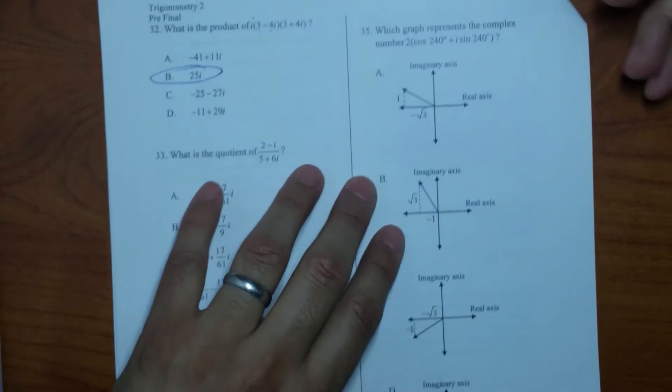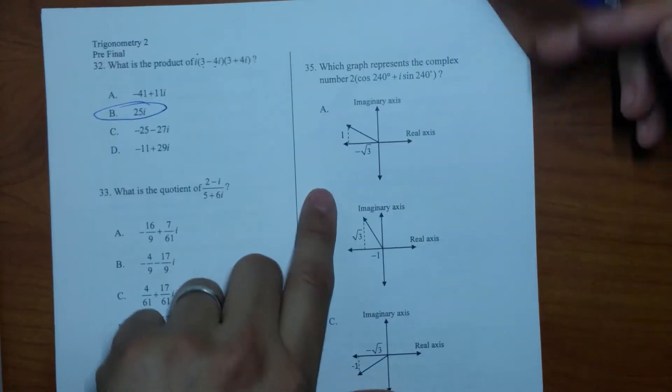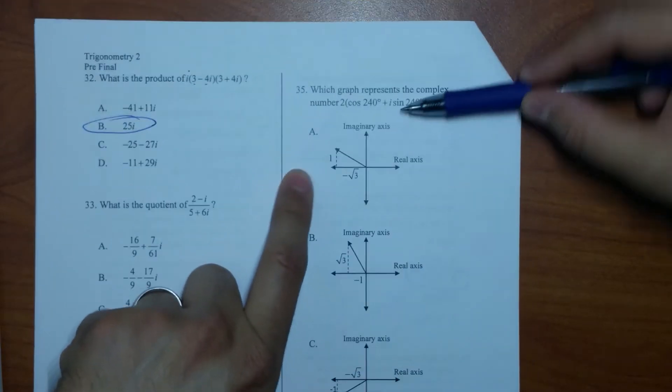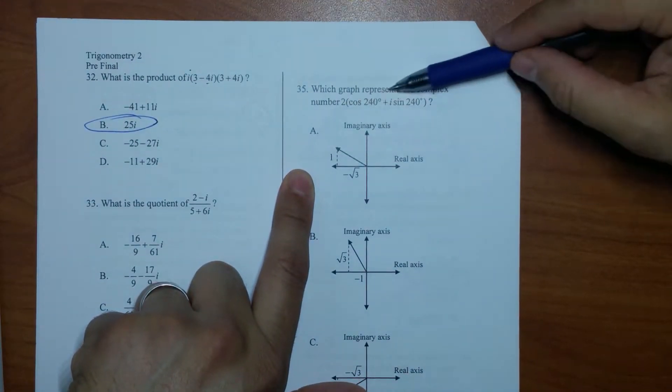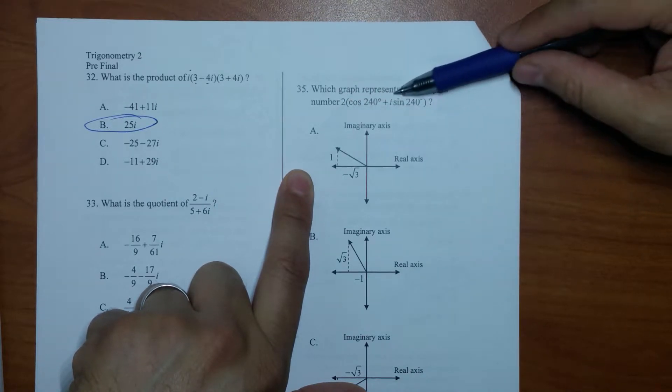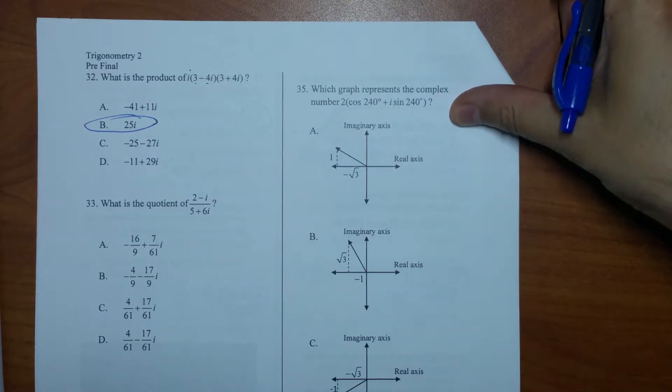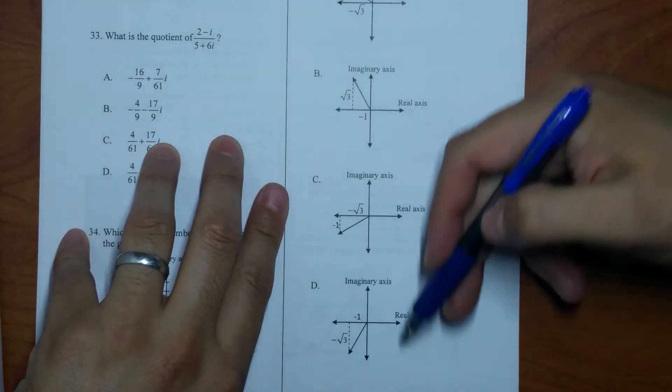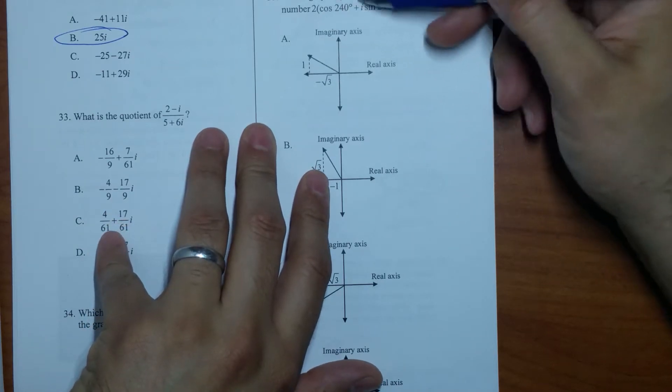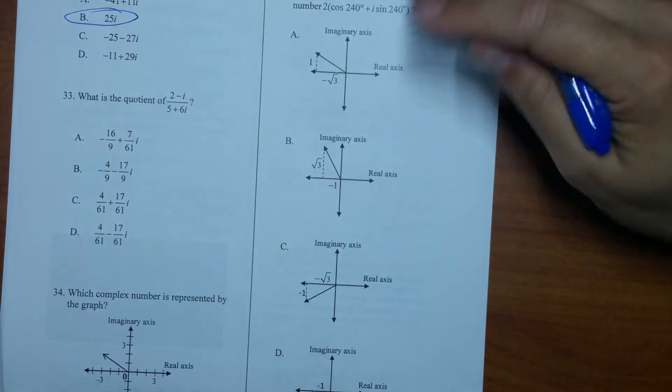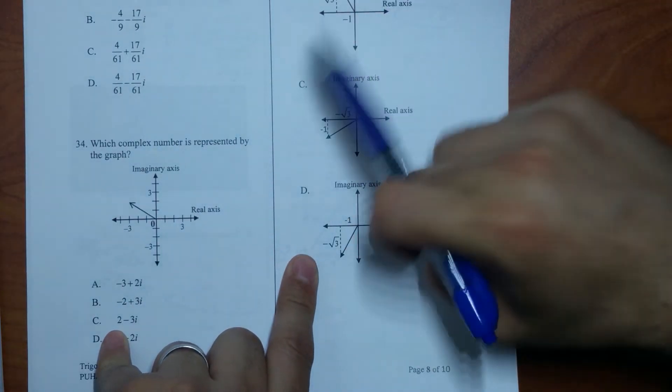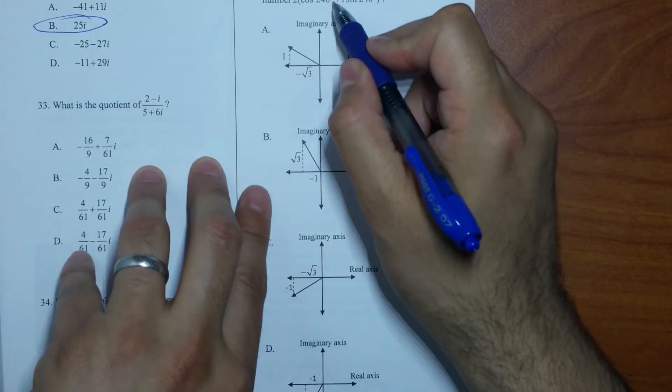So let's go with this one here, number 35. Which graph represents a complex number 2 cosine 240 plus i sine 240? So where is 240 at anyway? Should be in third quadrant, shouldn't it? Okay, that's a good hint, so I can get rid of some of these. So there's a couple things I need to try and do to figure out which one it's going to be. It's either going to be one of these. Let's take a look. What is cosine at 240?